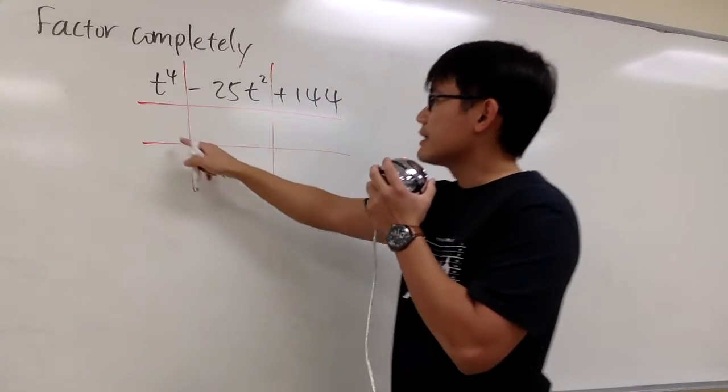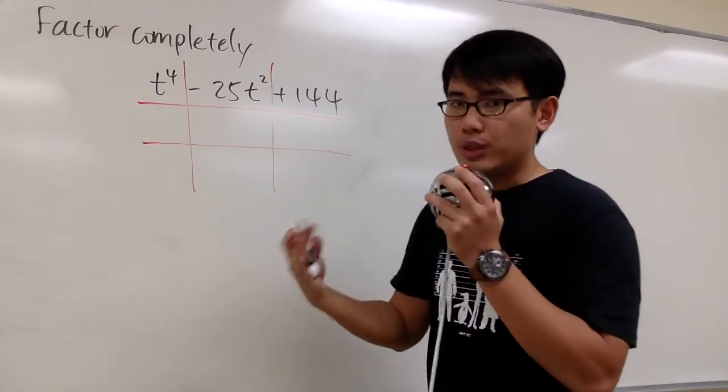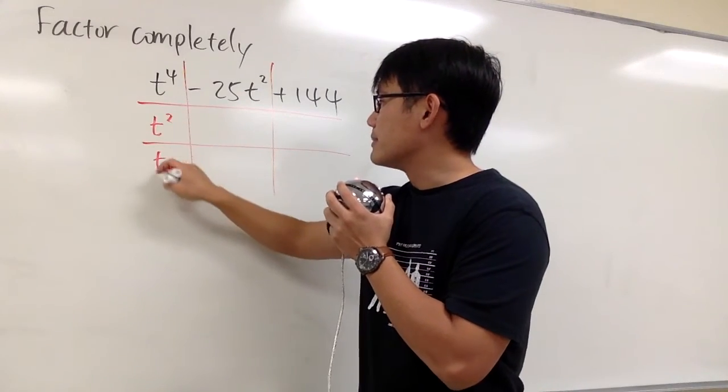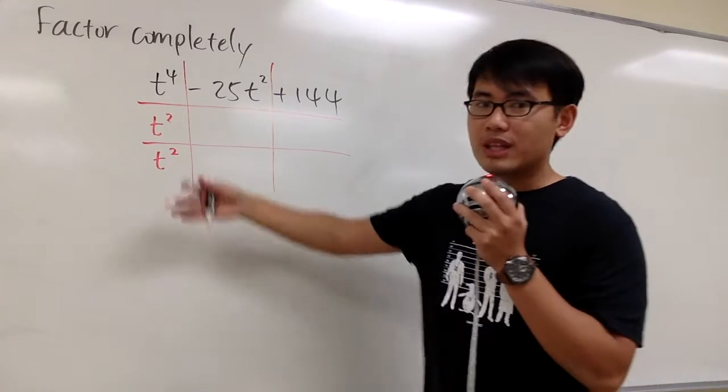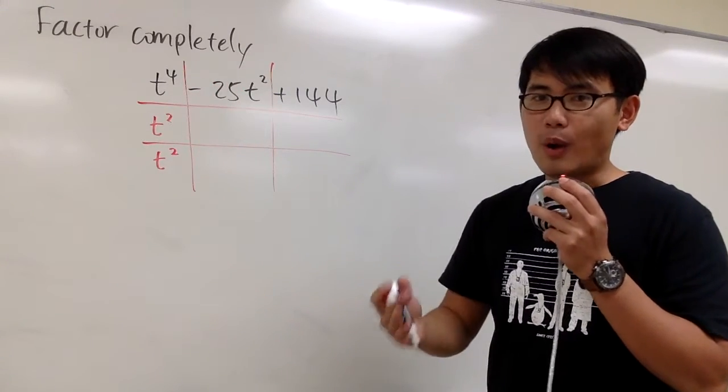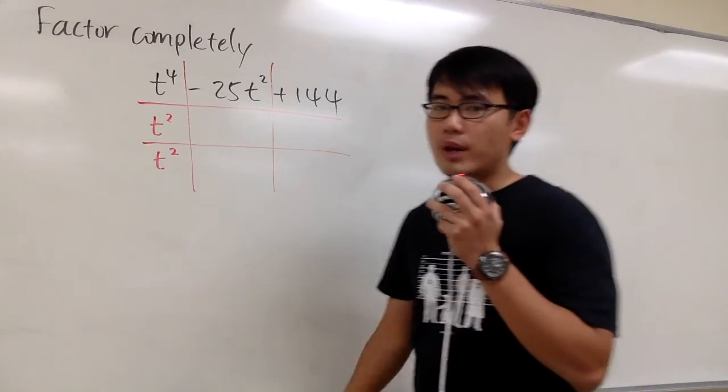So we begin by asking ourselves, what times what would give us t to the fourth power, and let's do it in a more balanced way. We need to have t squared times t squared, right? That would give us t to the fourth power. Even though t times t to the third power will end up t to the fourth power, but as I said, this is the more balanced way.